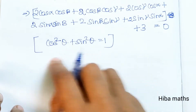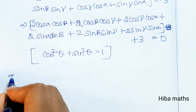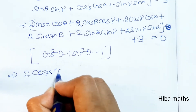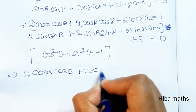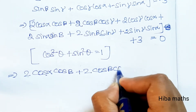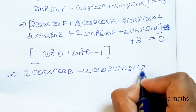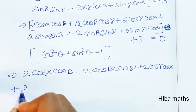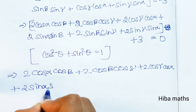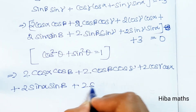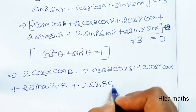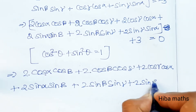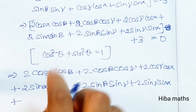We will replace and rewrite this line. The next line is: 2 cos α cos β + 2 cos β cos γ + 2 cos γ cos α + 2 sin α sin β + 2 sin β sin γ + 2 sin γ sin α.